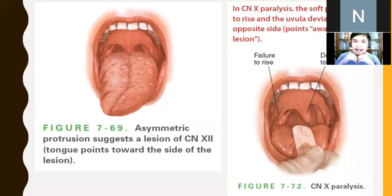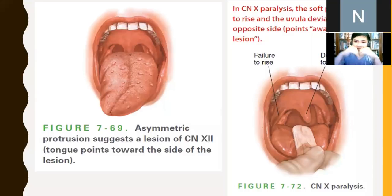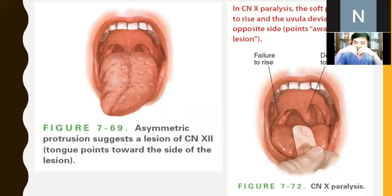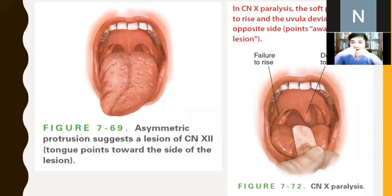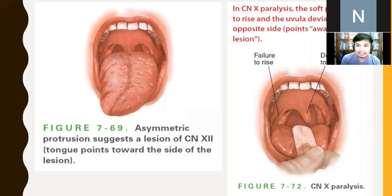For the 'ah test,' let the patient say 'ah' — the soft palate rises. The uvula, innervated by cranial nerve 10 — the vagus nerve — should be at the center. If there is a problem on the right side, that side will not elevate, so only the left side rises, making the uvula appear to point toward the left — the normal side. Comparing the two: the tongue points toward the lesion or abnormal side, while the uvula points toward the normal side.